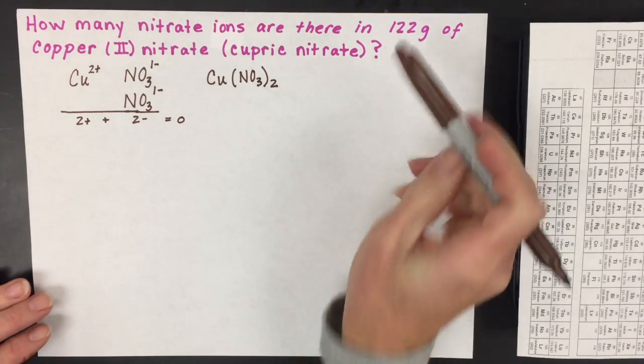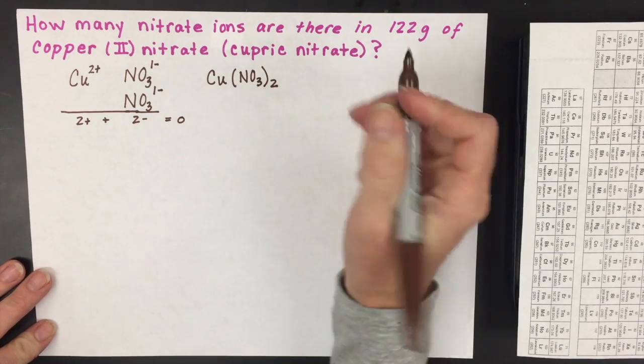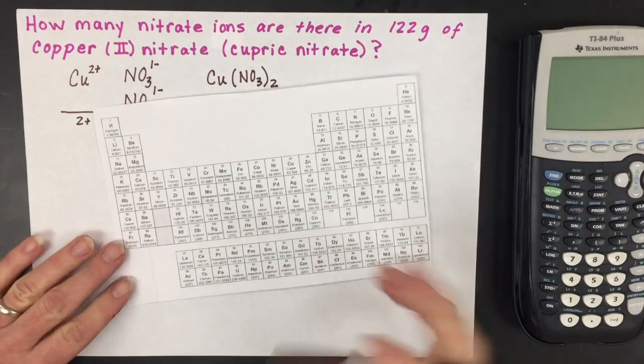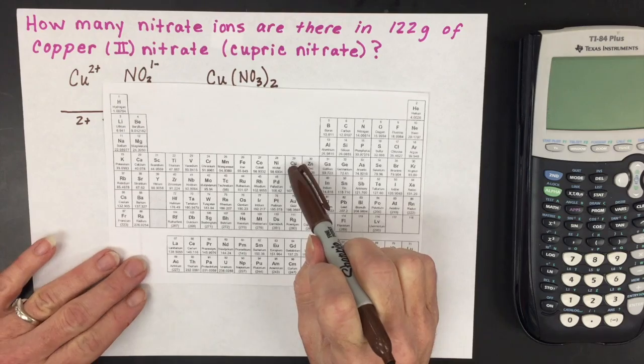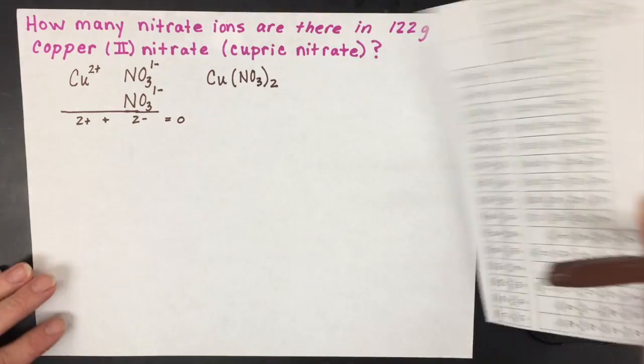The next step is calculating the formula mass or molar mass for this ionic compound. Copper has a molar mass of 63.546 on the periodic table, and we're going to need nitrogen's and oxygen's atomic masses.